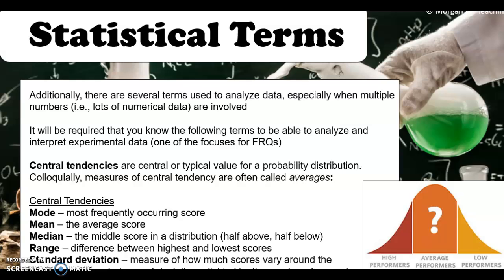Here are some of the ways that you determine a central tendency. First, you can look at the mode — the most frequently occurring score. Then you can look at the mean, which is the average score. To find a mean, if there are five numbers you add them all up and divide by five. The median is the middle score of a distribution, meaning you have to take the scores in order from lowest to highest and find what the middle one is.